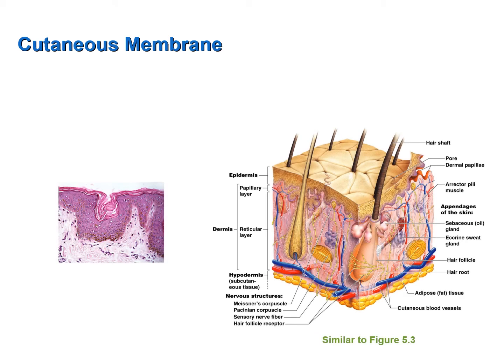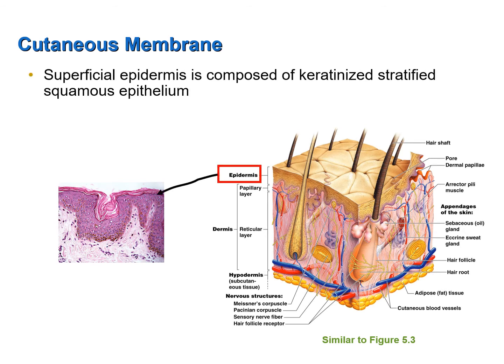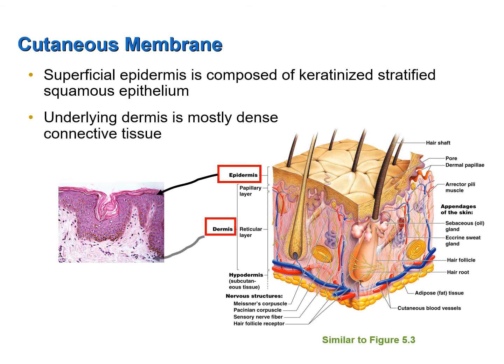The cutaneous membrane, like all epithelial membranes, consists of an outer layer of epithelial tissue and an underlying layer of connective tissue. Here we have on the left a microscopic section of skin and a drawing on the right. The outer layer of skin is called the epidermis and is composed of stratified squamous epithelium. This epithelium is keratinized — the very outer layer is composed of dead cells filled with a protein called keratin. Deep to the epidermis is the dermis, composed of mostly dense connective tissue. The epidermis and dermis together form the cutaneous membrane.